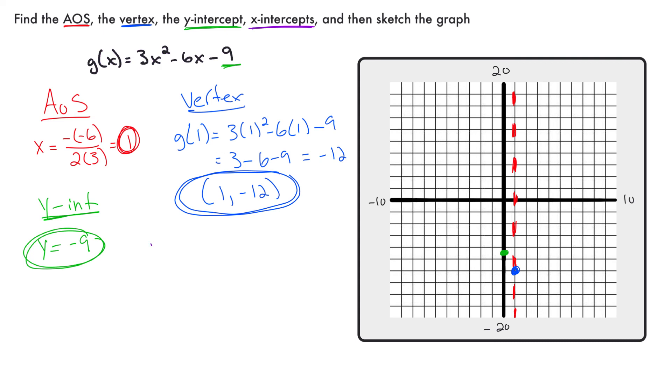Next, I'm going to find the x-intercept. Use whatever technique you want. But I notice a 3 could be factored out of that and get x squared minus 2x minus 3. And that factors into 3 times x minus 3 times x plus 1.